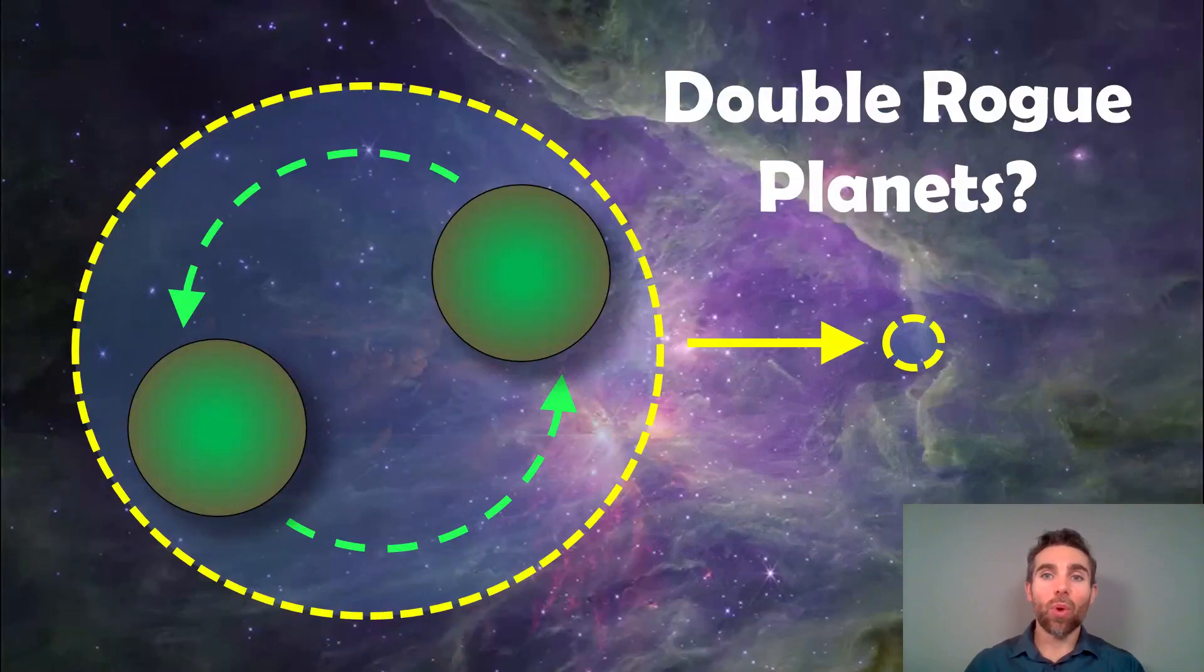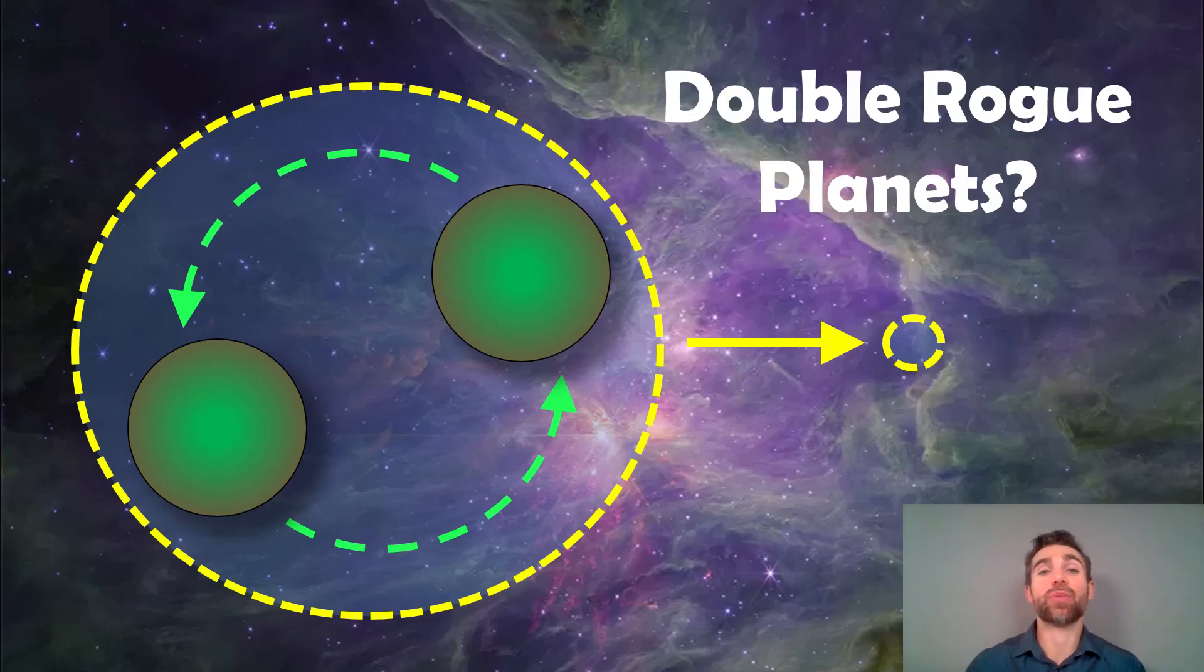Welcome to this video. In this video I wanted to have a look at something very strange and unusual that the James Webb Space Telescope has recently found, and these are double rogue planets. Before we have a look at what I actually found, I want to go over what a rogue planet is and what a double planet is and how we might have found them actually.